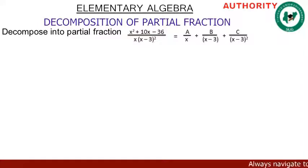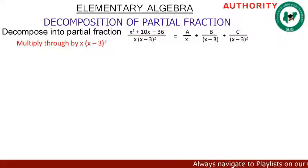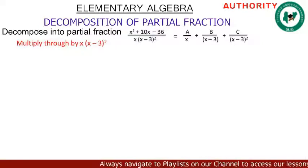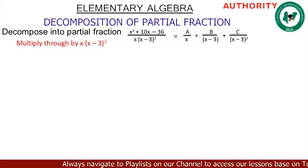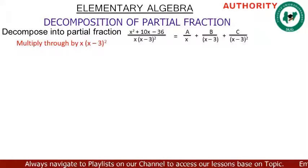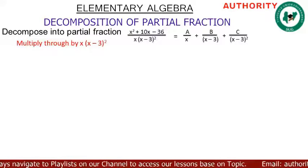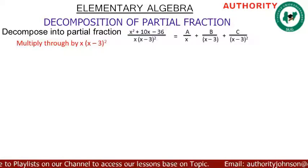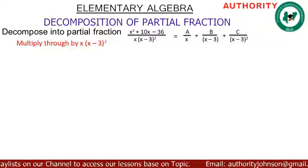From here, we're going to multiply everything — left-hand side and right-hand side — by x times (x minus 3) squared.